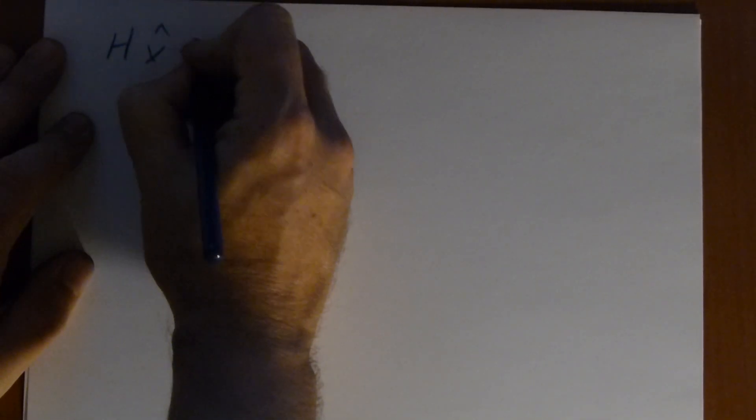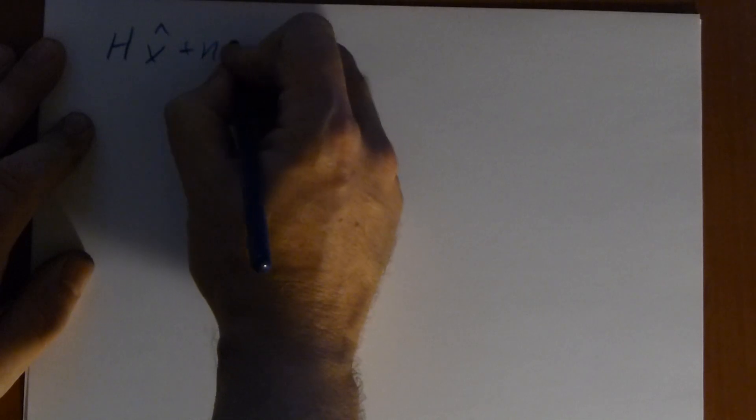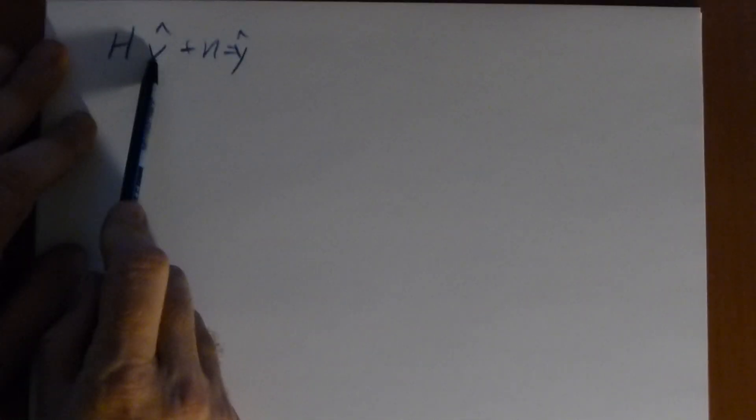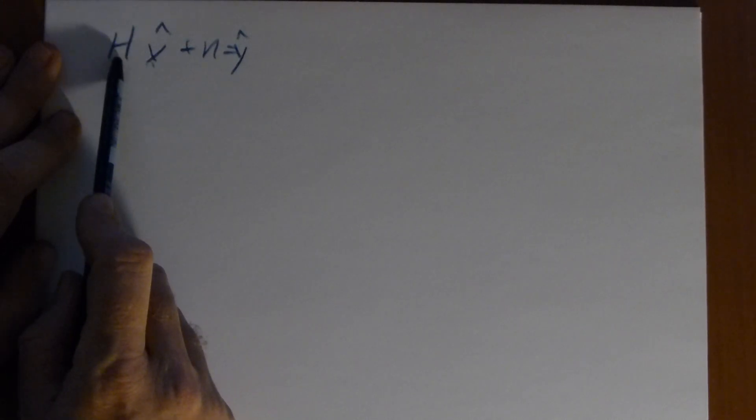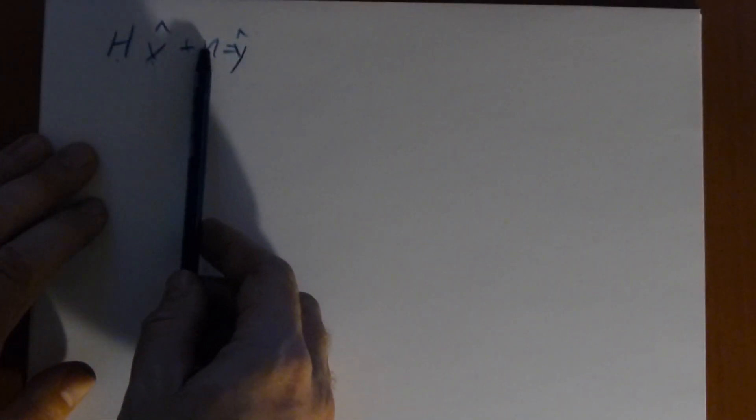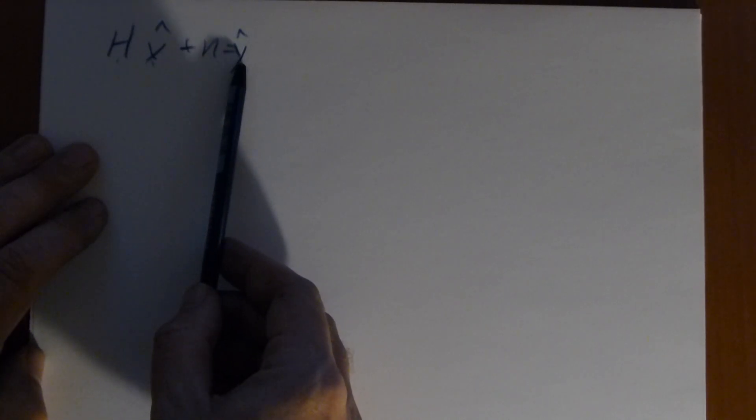Nice linear equation. We all love linear equations. H times X, plus N, equals Y. This is actually a matrix equation, but don't worry too much about that. X has all the information, the phase information, such that coming off the transmitting antenna.